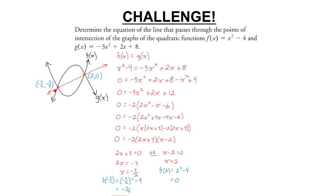First, find the points of intersection of the two parabolas by setting f(x) equal to g(x). Combine the equations, set to 0, simplify, and factor. Using the zero product property gives two different values of x. For each x-value, solve for y using f(x), since it seemed easier. This gives the coordinates of the two points of intersection.